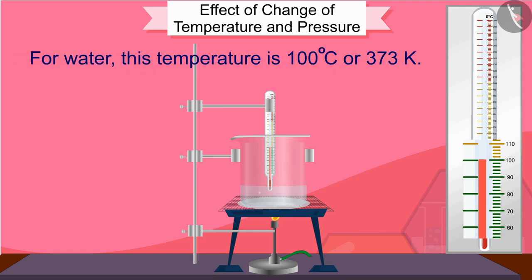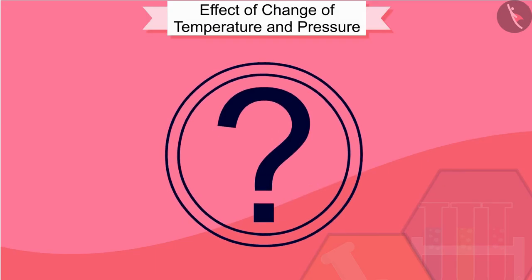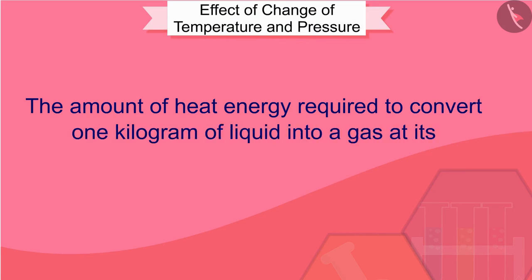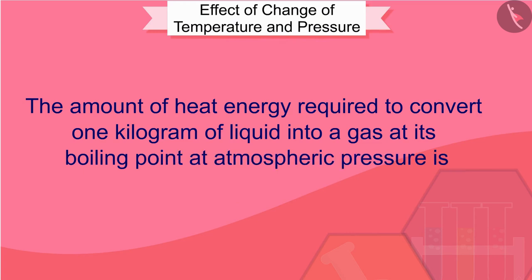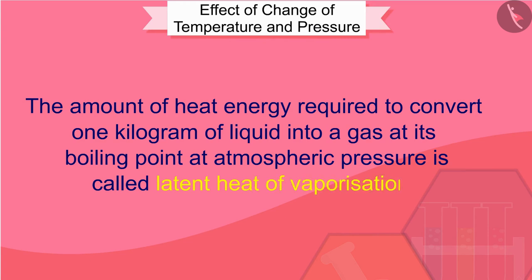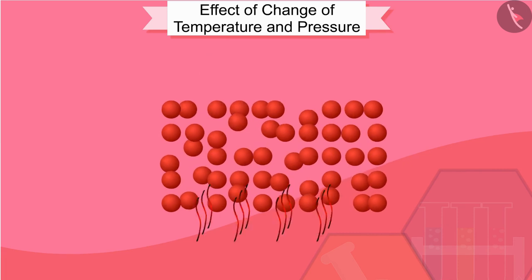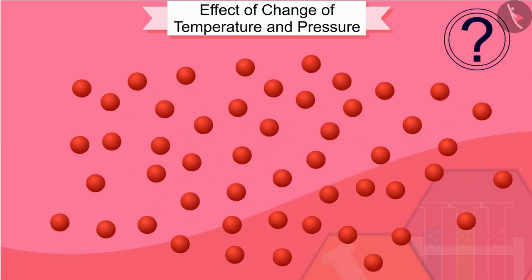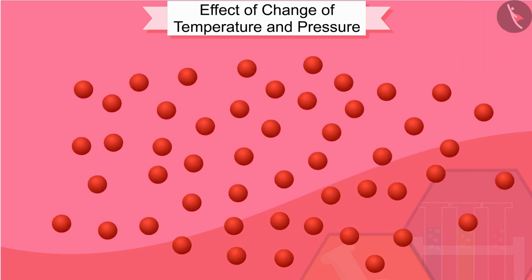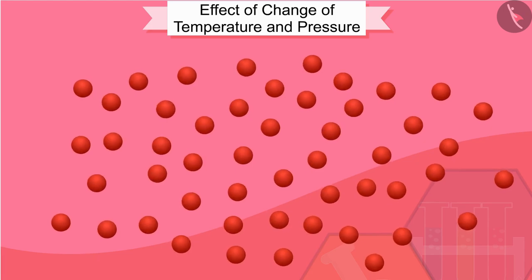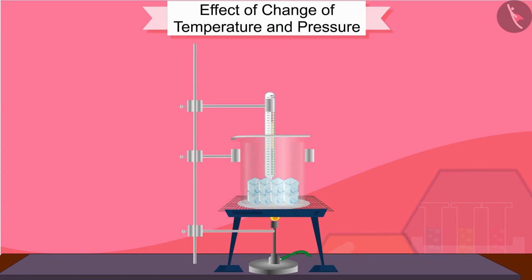For water, the boiling point is 100 degrees Celsius or 373 Kelvin. The amount of heat energy required to convert one kilogram of liquid into gas at its boiling point at atmospheric pressure is called the latent heat of vaporization. At 100 degrees Celsius, vapor particles have more energy than water particles at the same temperature. This is because vapor particles have absorbed excess heat in the form of latent heat of vaporization. By this activity we can conclude that by changing the temperature we can change matter from one state to another.